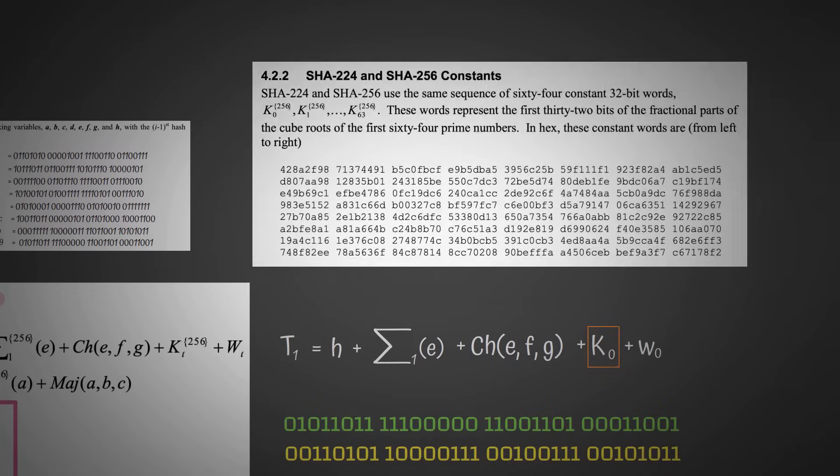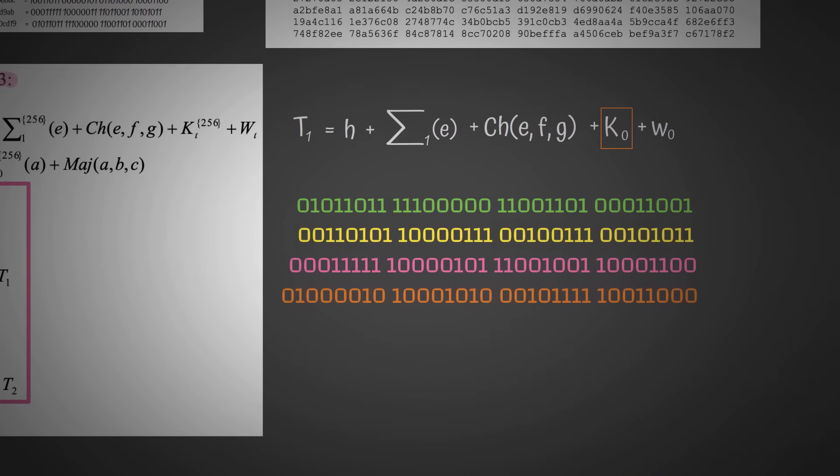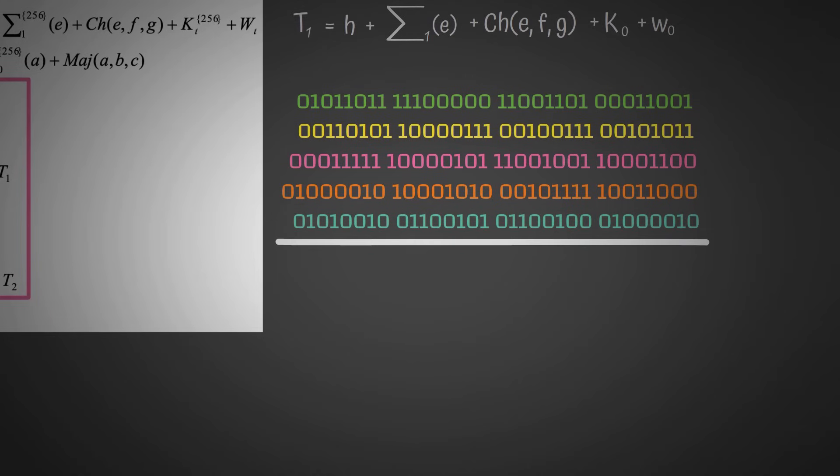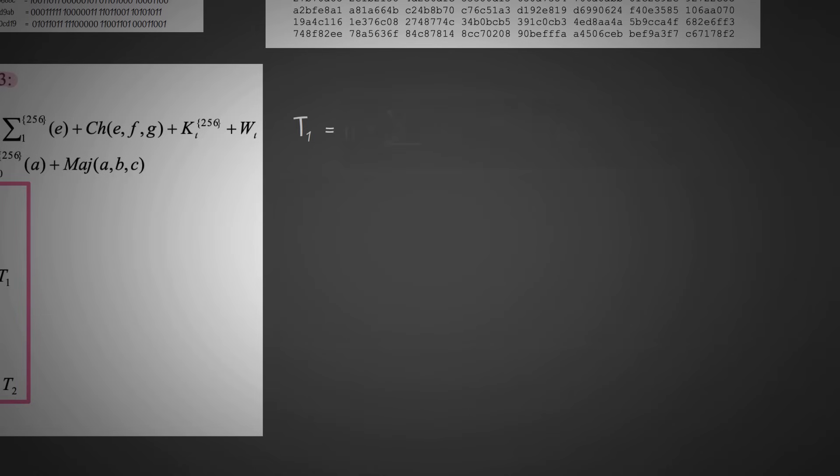Here is K0, which, remember, it was this thing over here, highlighted in orange. So we'll put that there, and we have W0, which we defined a few seconds ago. Now we do addition modulo 2 to the 32 to ensure that T1 is of bit length 32, and we get this.